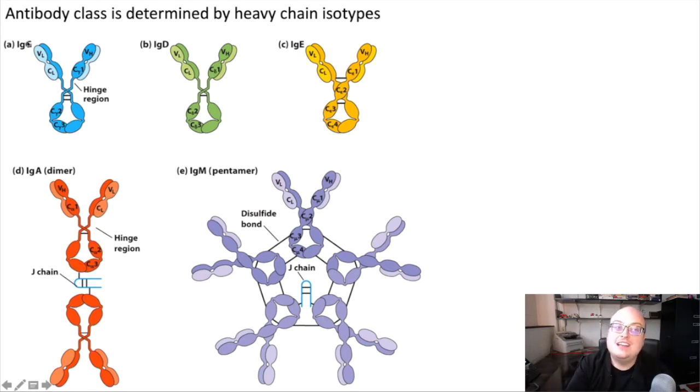And what determines the class, or the last letter in the name, is actually the isotype of the heavy chains of that antibody. So if you look here, you can see that in IgG, we have a variable heavy, which we expect. But within the constant heavy chains, we see that we have constant gamma1, Cgamma1, Cgamma2, Cgamma3. So a gamma heavy chain makes an antibody IgG, gamma equals G. Same thing for the rest.